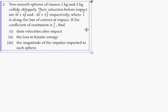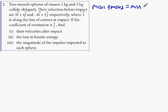Here's the problem: masses 2kg and 3kg collide obliquely. Their velocities before impact are 3i plus 4j and minus 4i plus 3j respectively, where i is along the line of centers at impact. If the coefficient of restitution is 3 over 7, find their velocities after impact and the loss in kinetic energy. We'll start with our formulas: M1U1 plus M2U2 equals M1V1 plus M2V2 for conservation of momentum, and minus E equals V1 minus V2 all over U1 minus U2 for Newton's experimental law.